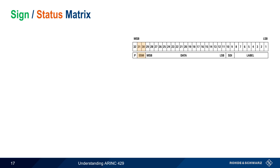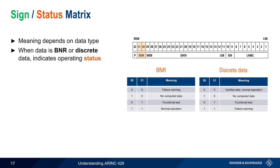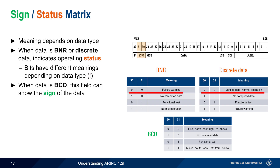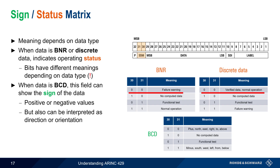The sign status matrix consists of two bits whose meaning depends on the data type. If the data field is binary data or discrete data, the SSM bits indicate the operating status — but be aware that the meaning differs: 00 means a failure for BNR, whereas it means normal operation for discrete data. For BCD data, which does not have a native sign bit, the SSM can be used to indicate the sign of the data — whether the BCD coded value is positive or negative, or to indicate direction or orientation. The meaning or interpretation of the SSM bits always depends on the type of data contained in the word.